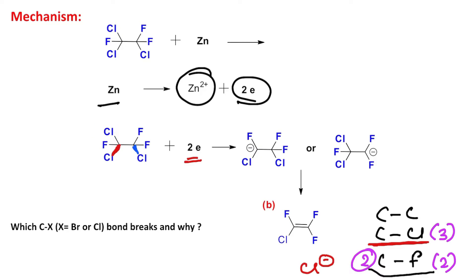In this case you can see the neighboring carbon with respect to this negative charge has both chloride and fluoride. Question: who will leave? Obviously chlorine will leave because chloride is a better leaving group compared to fluoride.